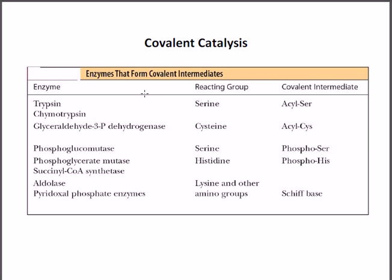Different types of covalent intermediates can be produced depending on the reacting groups present in the active site of the enzyme. For trypsin and chymotrypsin, serine is a very important reacting group, donating to produce an acyl-serine intermediate. For glyceraldehyde phosphate dehydrogenase, cysteine is the reacting group, helping to produce an acyl-cysteine intermediate. These reacting groups provide the nucleophiles that initiate the reaction and produce a stable transient covalent intermediate that is then broken down into products.